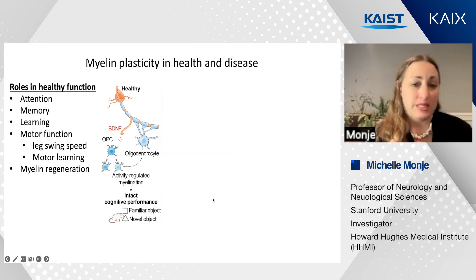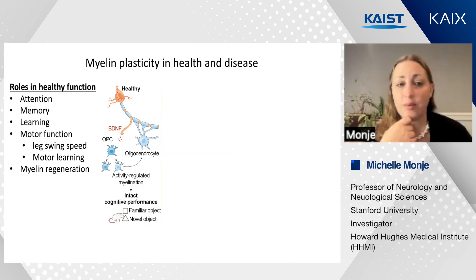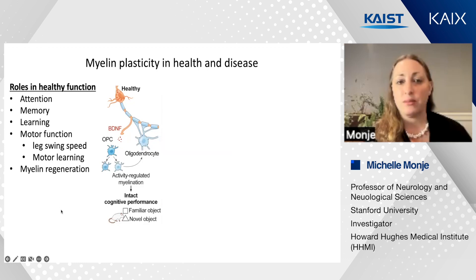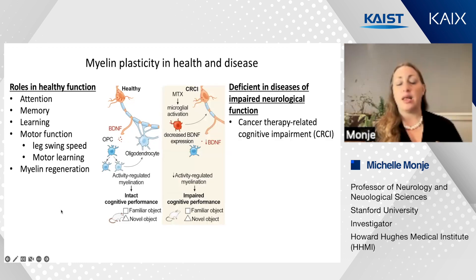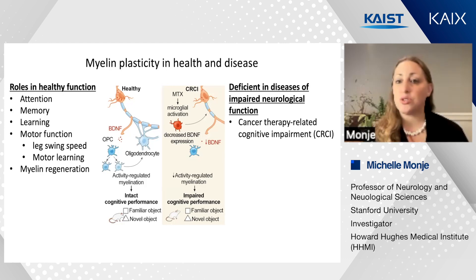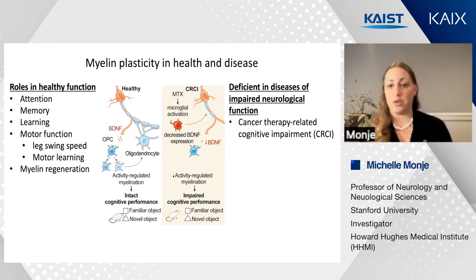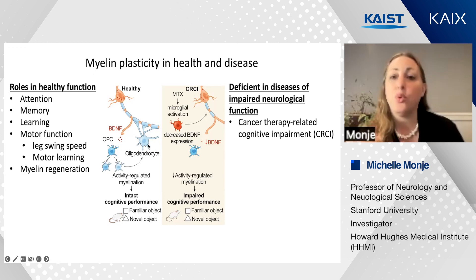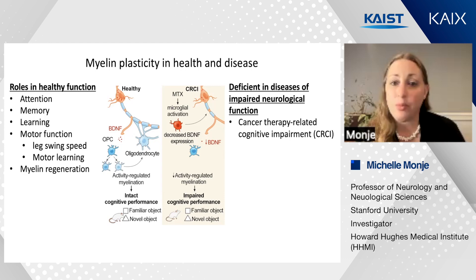Roles for myelin plasticity have now been uncovered in the healthy brain relevant to attention, memory, learning, and motor function, and can promote myelin regeneration. But given these roles in healthy cognitive function, it makes sense that if myelin plasticity were disrupted, that might contribute to cognitive impairment. Indeed, we find that myelin plasticity is an important component of the pathophysiology of the cognitive impairment that happens in the context of cancer therapy.